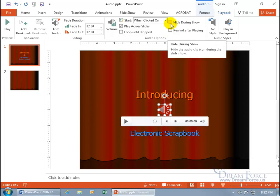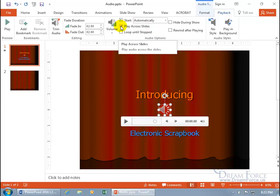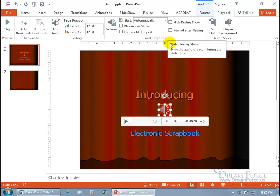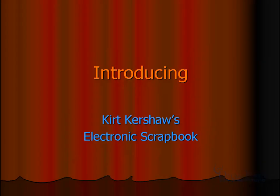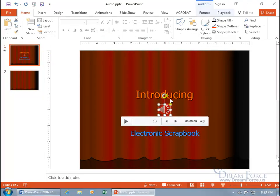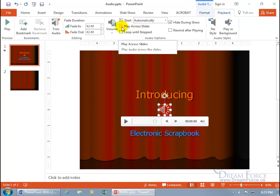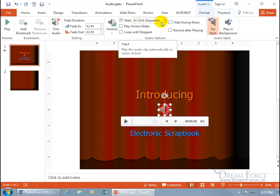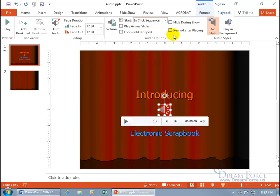You can actually Hide During Show, so that if you select Automatically — do you really need to see the speaker icon during playback? No. Go ahead and check it. And then begin the slideshow — it just clicked to advance to the next slide and it cut off automatically because I unchecked Play Across All Slides. Over here, you've got No Style — click on it and it removes all the custom settings and goes to the default In-Click Sequence, which is new to PowerPoint 2016. PowerPoint 2013 only had Automatically and When Clicked On.